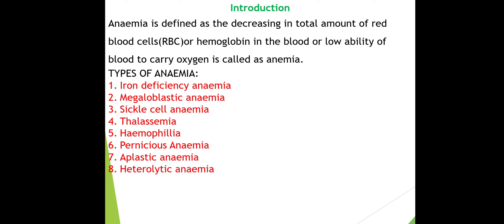To talk about anemia, we will first look at blood function. The main function of blood is to carry oxygen and nutrition. Anemia is defined as a decrease in the total amount of RBC or hemoglobin in the blood, or when the ability of blood to carry oxygen is reduced.